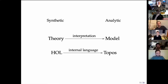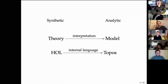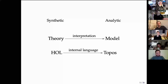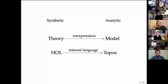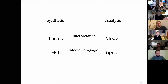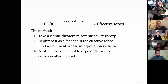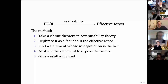Toposes are models of higher-order logic — for many naturally arising toposes, it's intuitionistic higher-order logic. If you're familiar with set theories, you can think of a topos as something like bounded Zermelo set theory: all quantifiers are bounded, separation is bounded, there's no replacement, and it's intuitionistic. A topos is then like a kind of set-theoretic model.